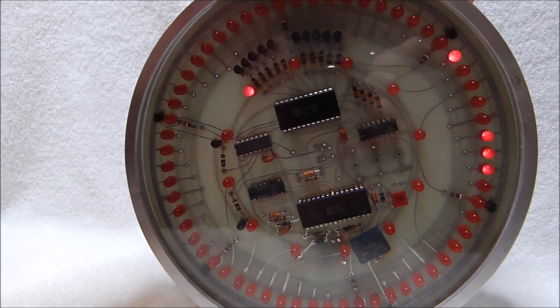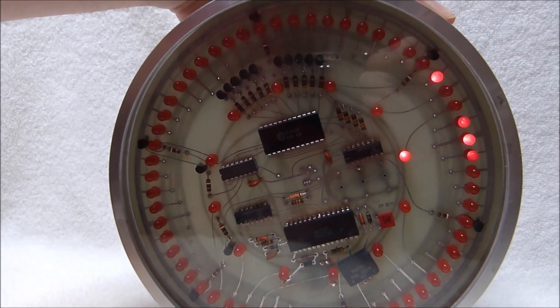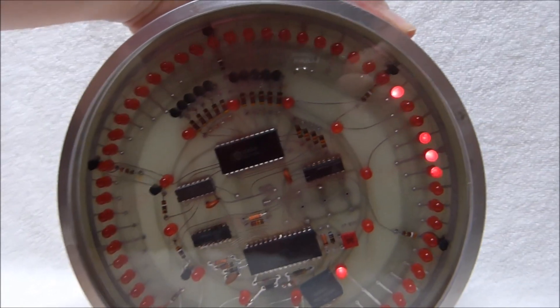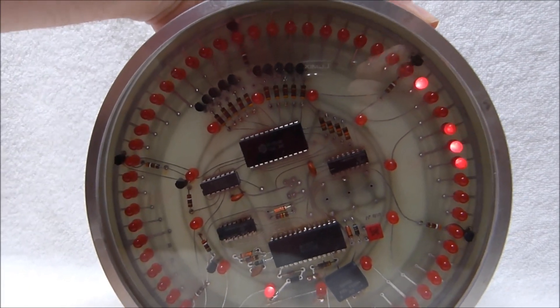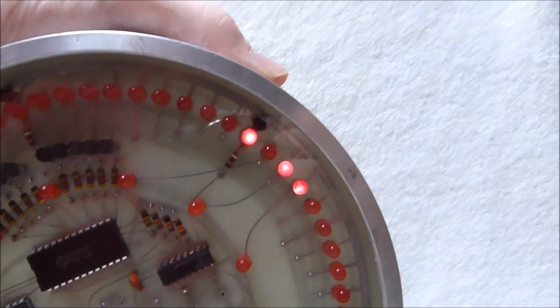As with other National Semiconductor clock chips, the MM5311 rapidly advances the minutes and holds the seconds when the fast set button is pushed. You can see the hours going around there and the seconds was stationary.